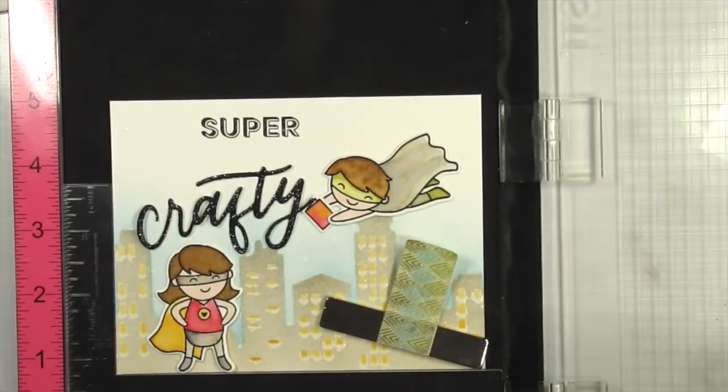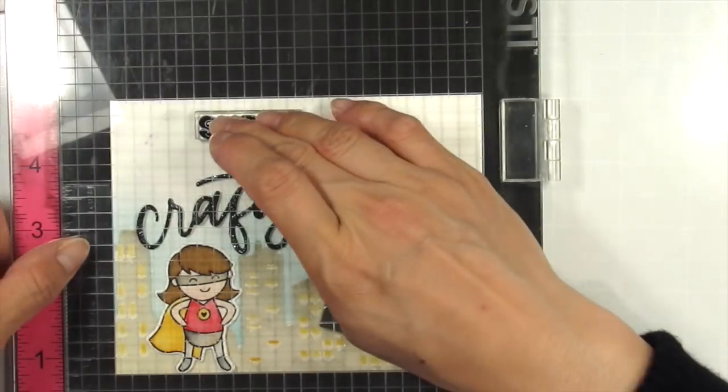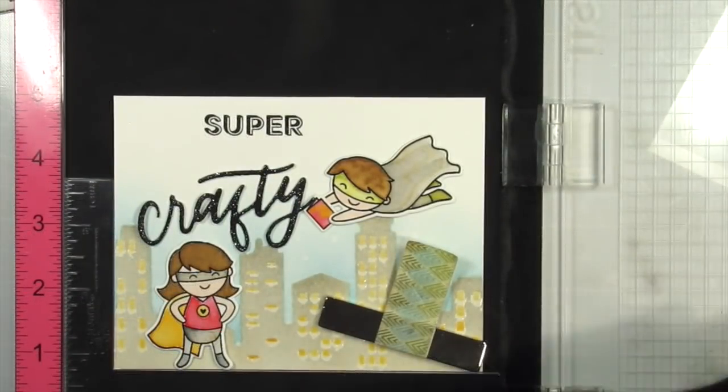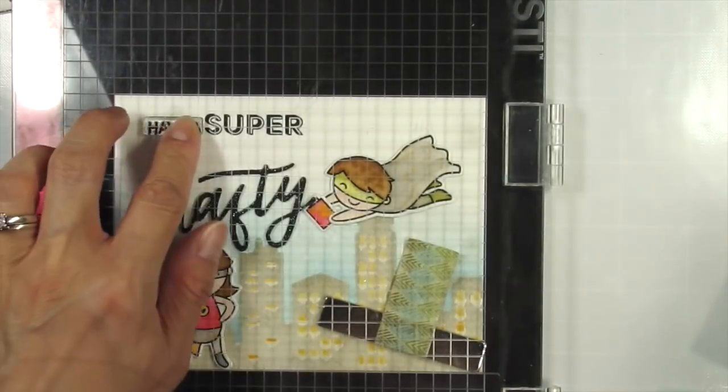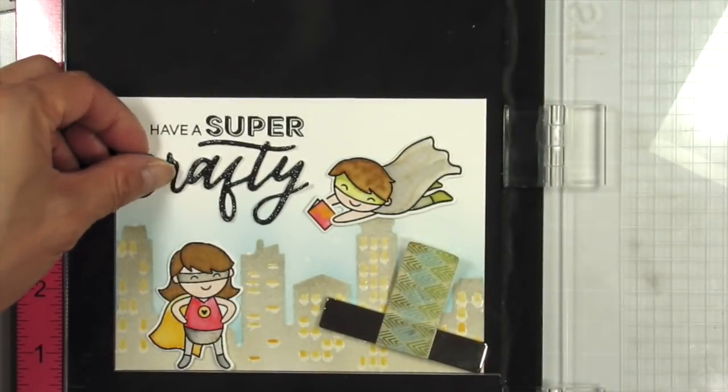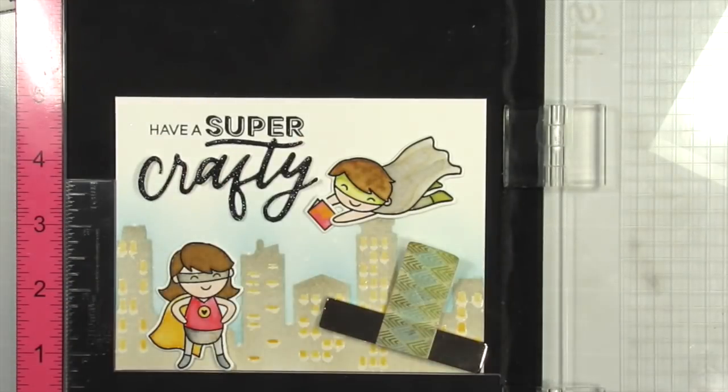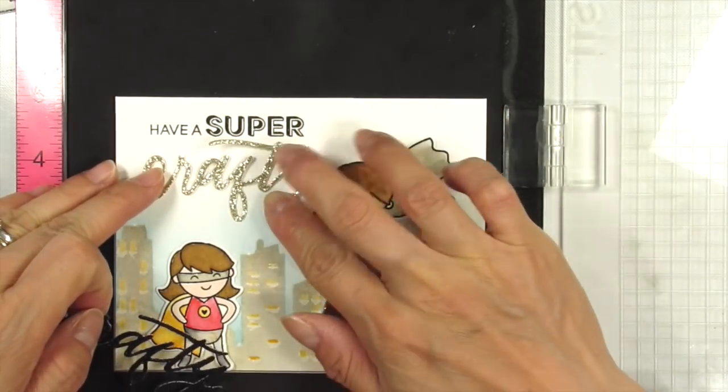I have all the other elements in the position so I know where to stamp. I'm creating a sentiment that reads, have a super crafty birthday. I'm stamping the different words one at a time since they're different stamps and I want to be sure to line them up properly with the previous stamped word. I've die cut the crafty word from black glitter cardstock and I love the way the crossed T seems to underline the super word so perfectly.